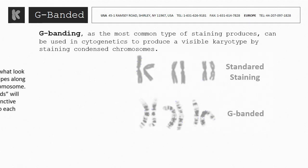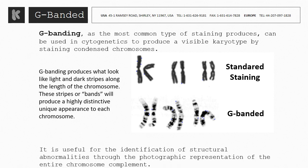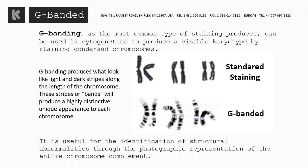G-banding produces what look like light and dark stripes along the length of the chromosome. These stripes or bands produce a highly distinctive, unique appearance to each chromosome. It is useful for the identification of structural abnormalities through the photographic representation of the entire chromosome complement.